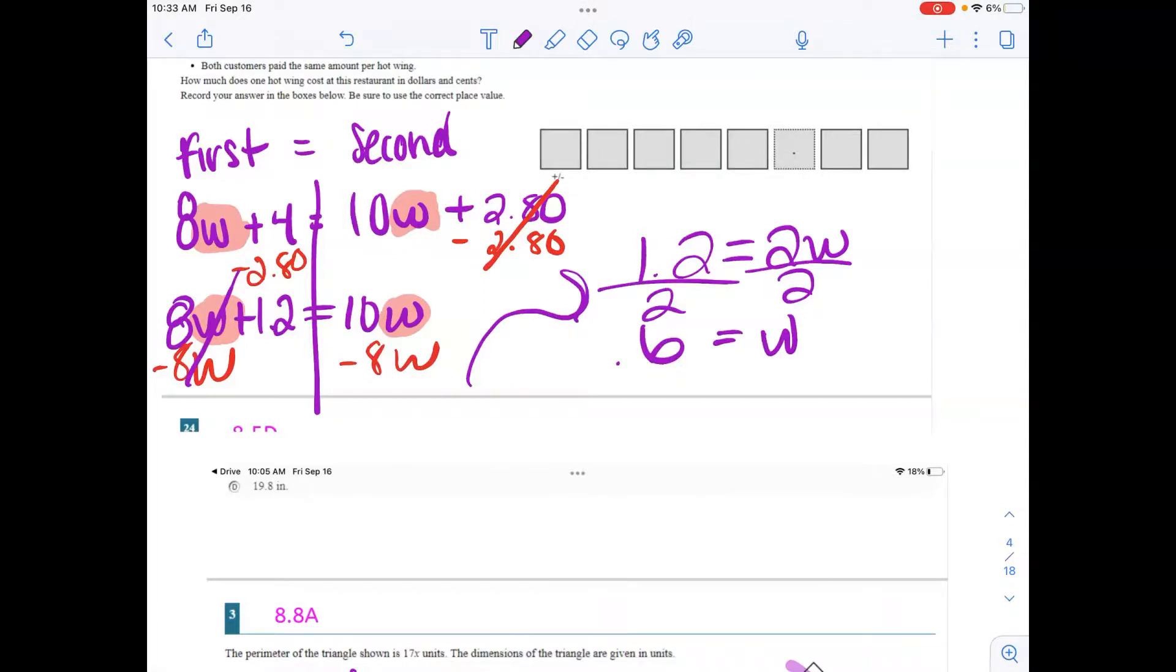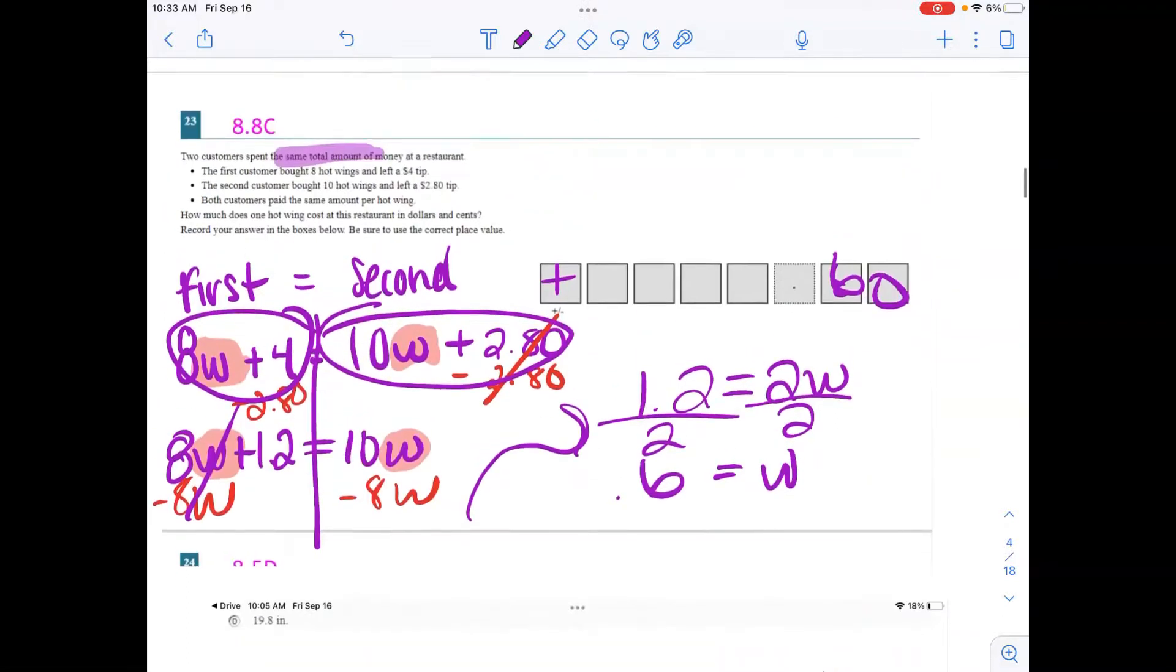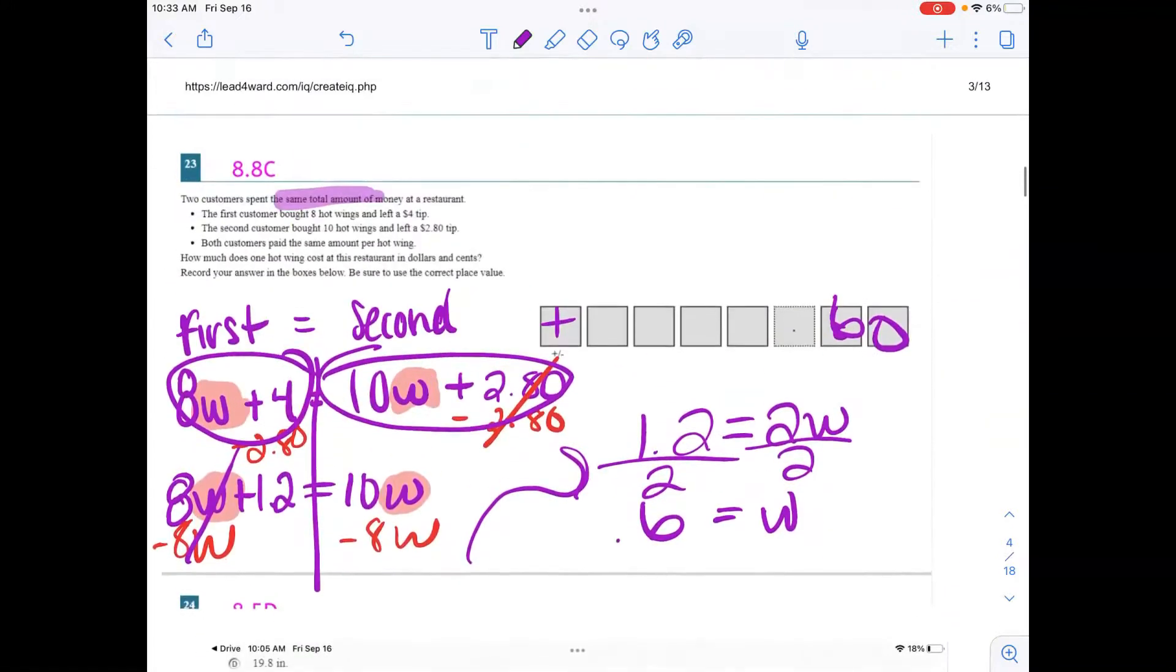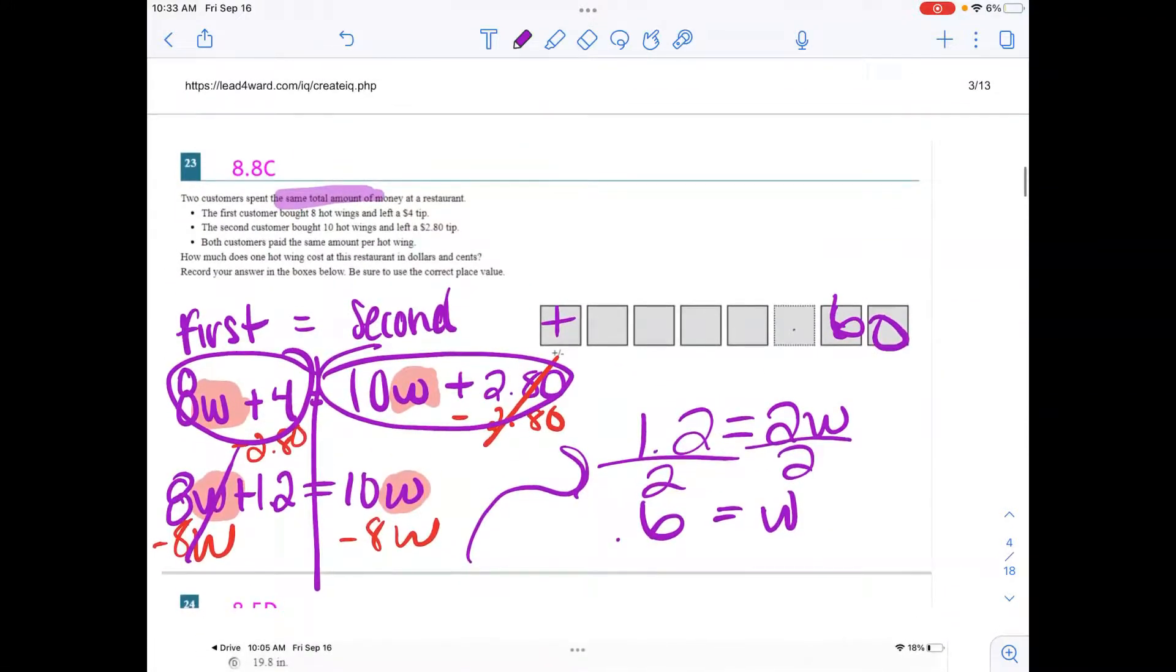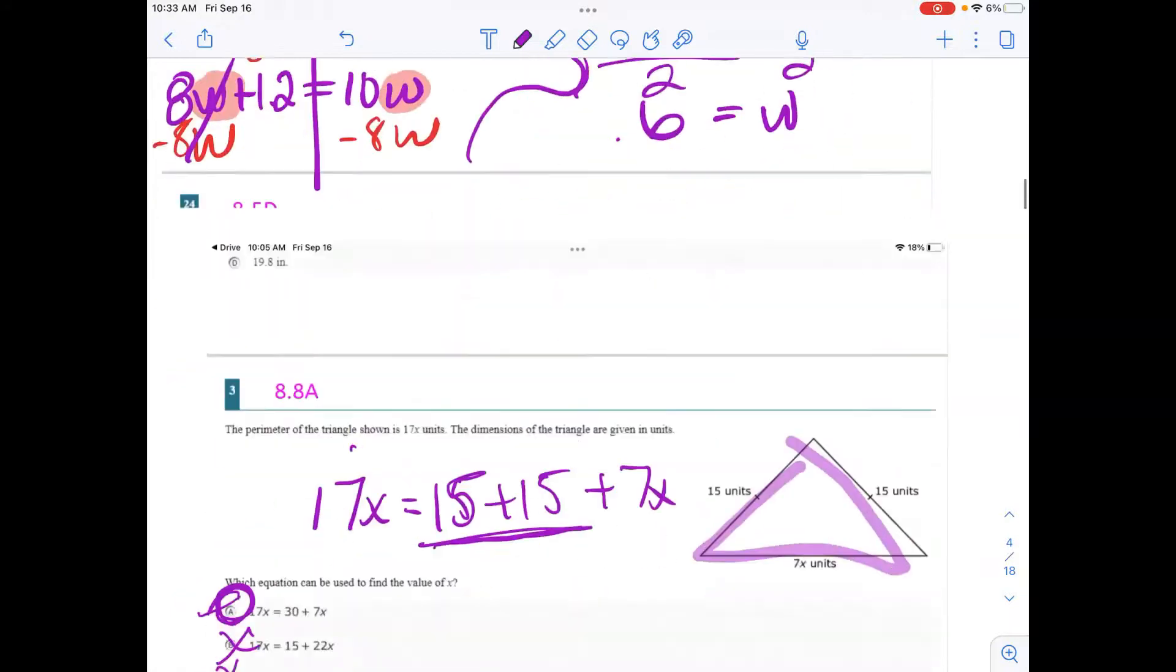For students to check their answer in Desmos, they're going to type in the left side, then they're going to type in the right side and see where the two intersect. Look at the X value, and that is going to be 0.6 or 60 cents. So that is 8.8C. 8.8A, writing the equation, 8.8C is modeling and solving the equations.